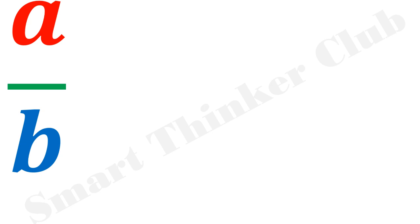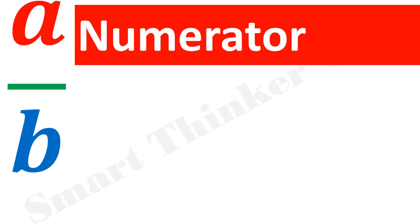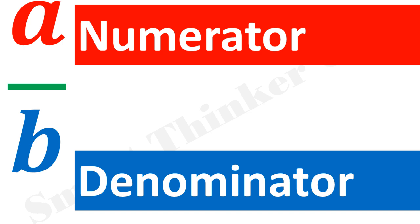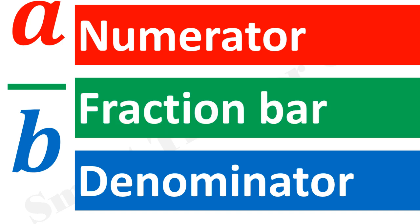Consider this A divided by B. Here, A is called numerator, B is called denominator, and the division sign is called the fraction bar.